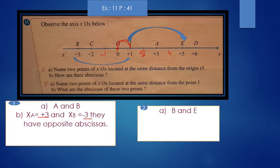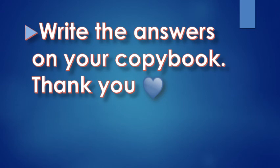What are the abscissas of these two points? The abscissa of E is plus 5. The abscissa of B is minus 3. So, x of B equals minus 3 and x of E equals plus 5. Please write the answers on your classwork copybook and hand in your work and the assignment. Take care of yourselves. Bye-bye.